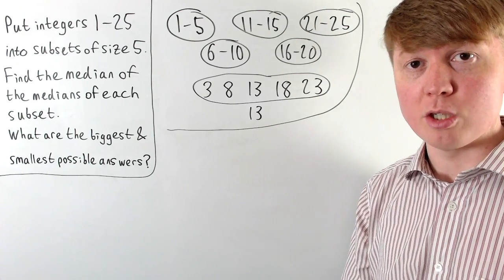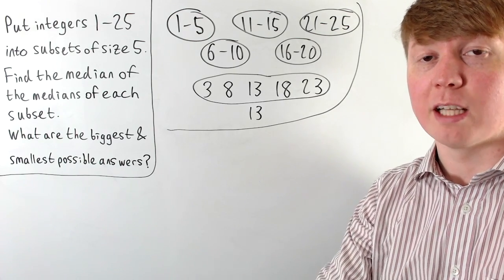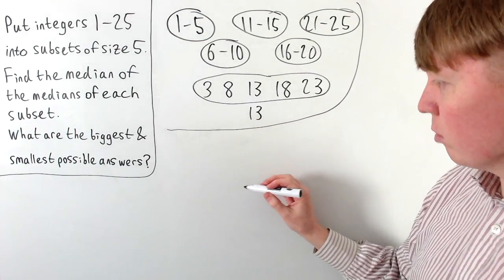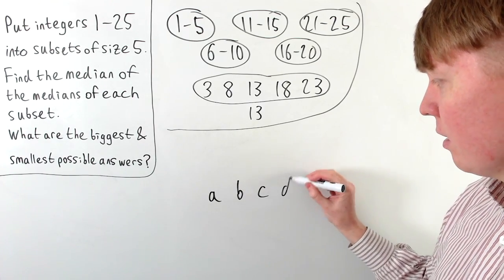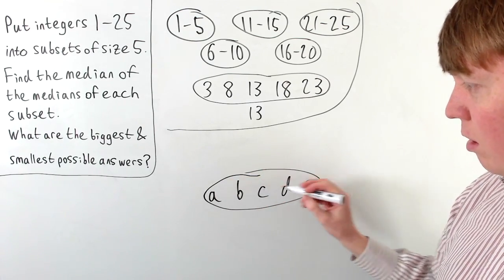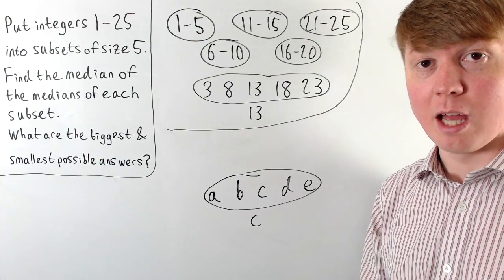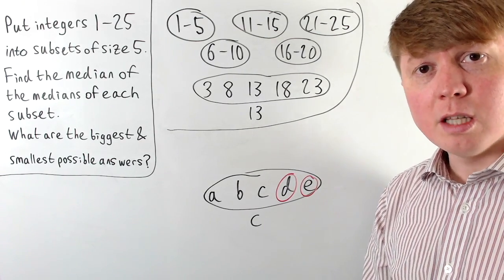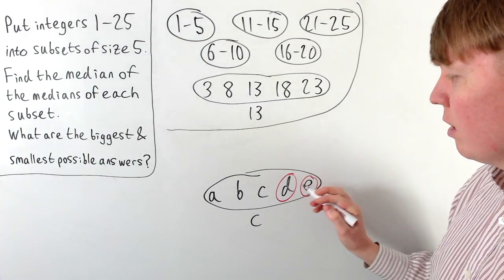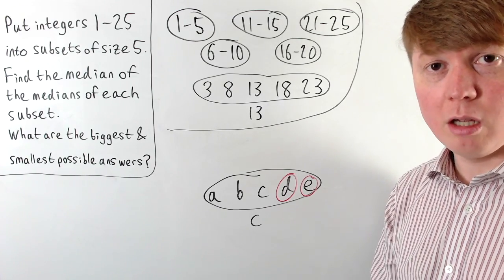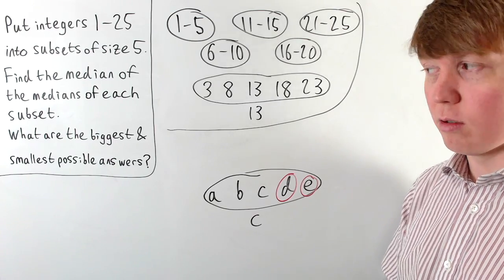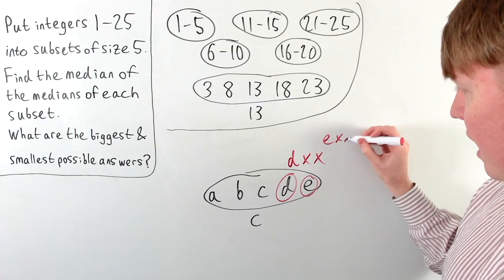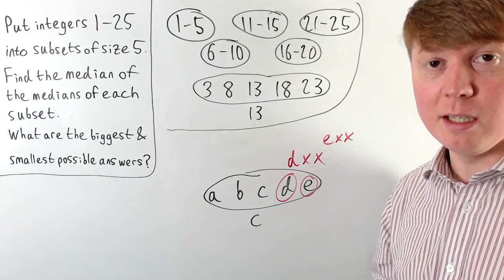We'll start by trying to find the biggest possible value, then use a similar argument to find the smallest. We'll consider this from the point of view of our five medians from each subset — call these A, B, C, D, and E, in order. C will be our final median. At this point, D and E have got to be bigger than our final median, which already rules out 24 and 25, because we need at least two integers which are greater than our final answer.